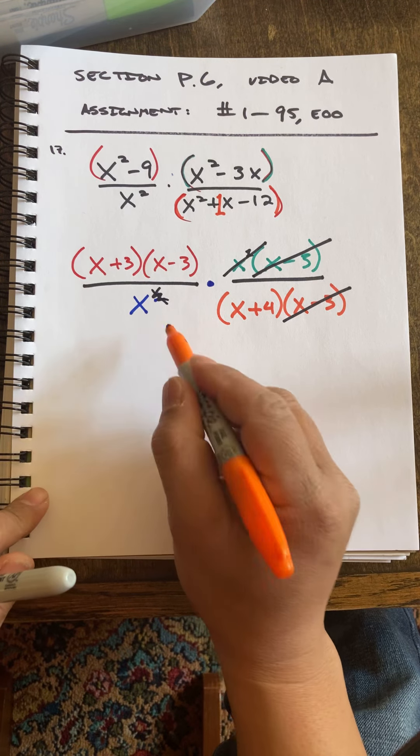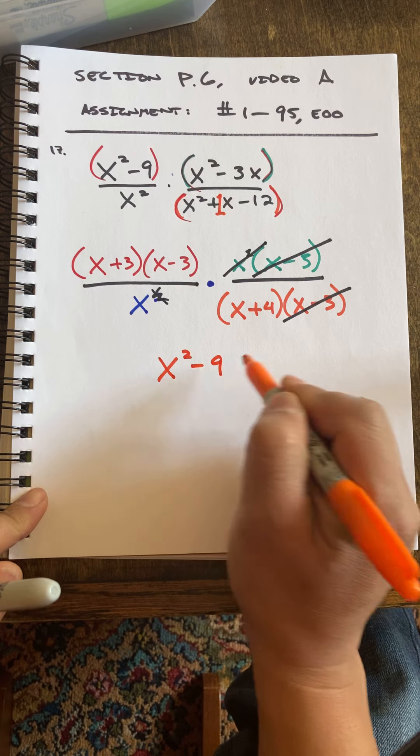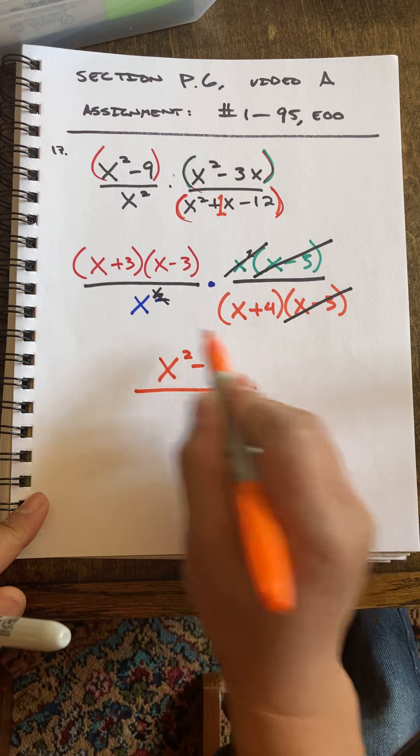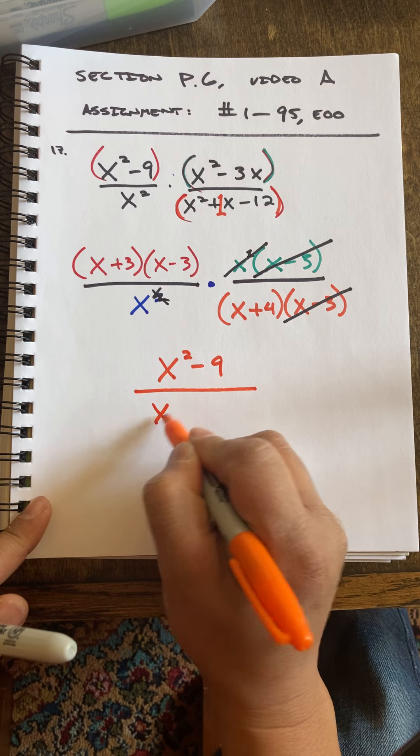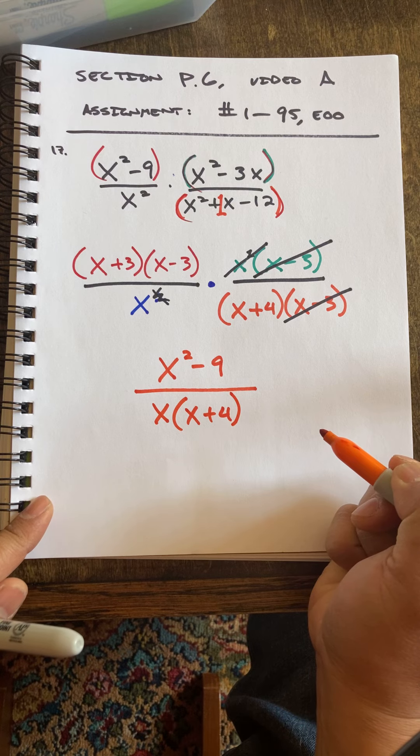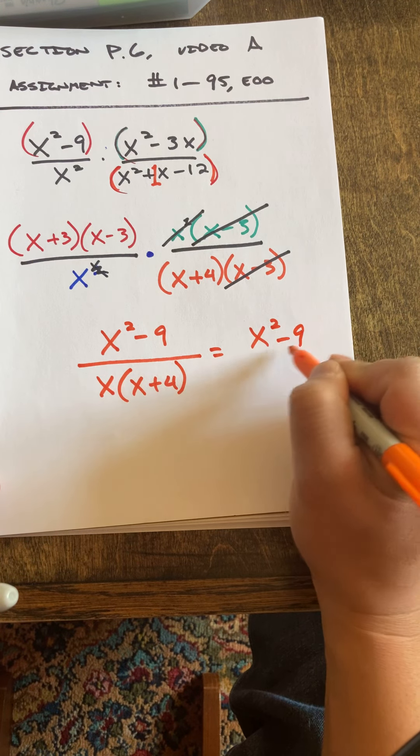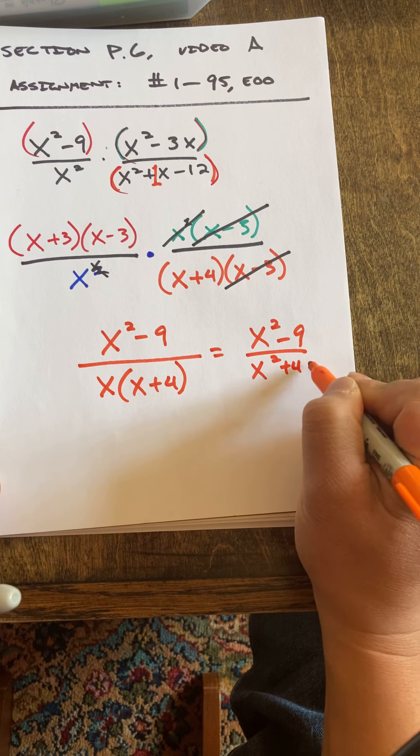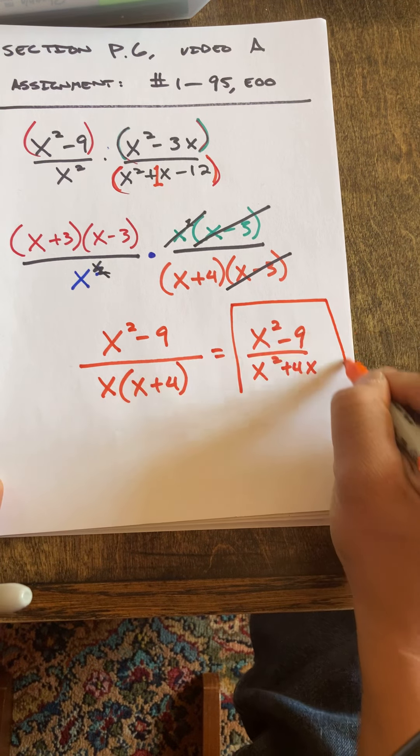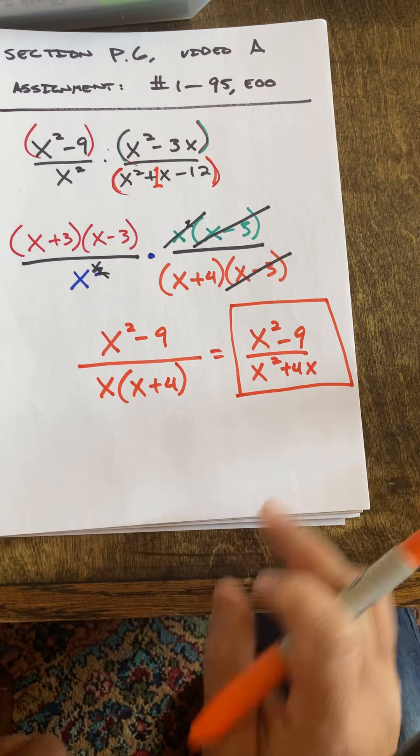I'm going to put this term back together. X squared minus nine, just cause I think it's prettier. And in the denominator, X times X plus four. I can make that look better. X squared minus nine over X squared plus four X. Not sure which one the back of the book has, but I'll go with this.